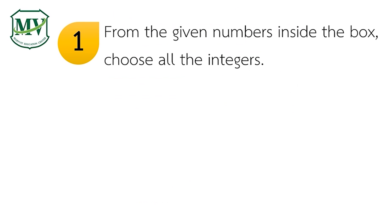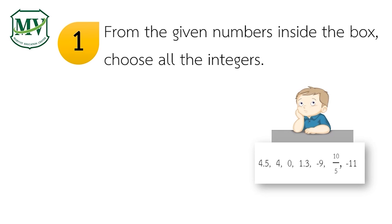Question number 1. Choose integers from the given numbers inside the box. There are 7 numbers given, and those are: 4 and 5 tenths, 4, 0, 1 and 3 tenths, negative 9, 10 fifths, and negative 11. So which of these numbers are integers?